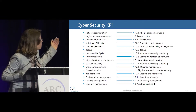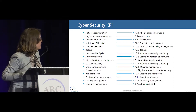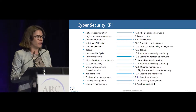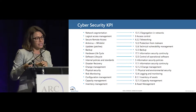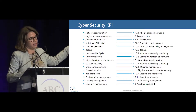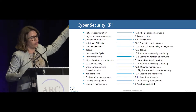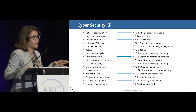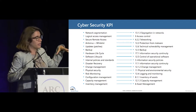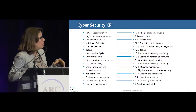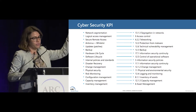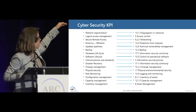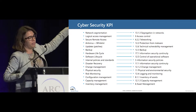The items include: network segmentation, logical access, remote access, antivirals, updates, and backups. We try to measure, average, or count at each site how we are doing in each of these items. We also apply different weights to them. This is very important because at the end we can get a global number for the entire company, or break it down by site, by country, or by protection item — for example, analyzing how we are doing on backup across the company.